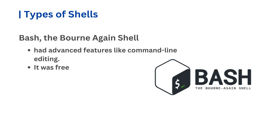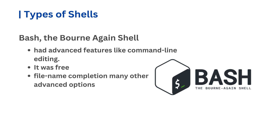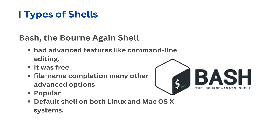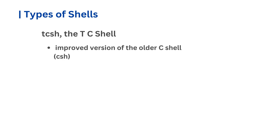Bash includes features like command line editing, similar to the Korn shell, and file name completion, like the C shell, along with many other advanced options. Bash has become the most popular shell and is the default shell on both Linux and Mac OS X systems. Linux systems also helped make the TC shell, or TCSH, well known. TCSH is an improved version of the older C shell, CSH, and adds features like command editing and file name completion.